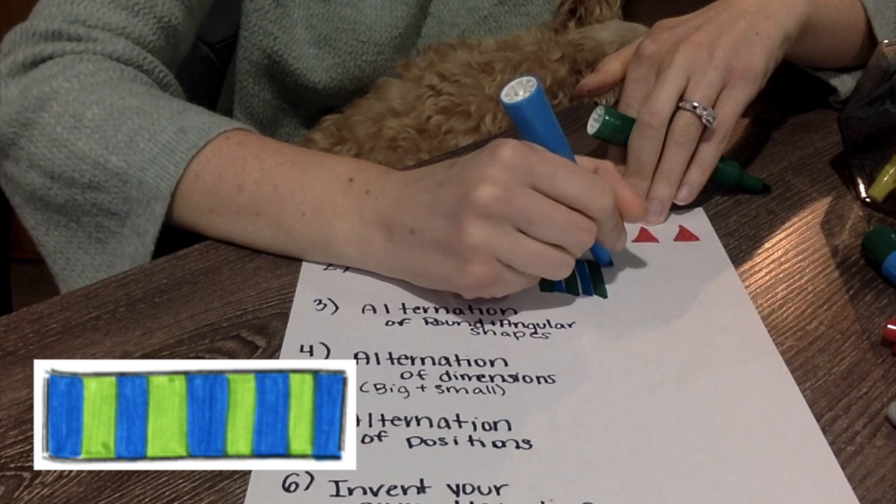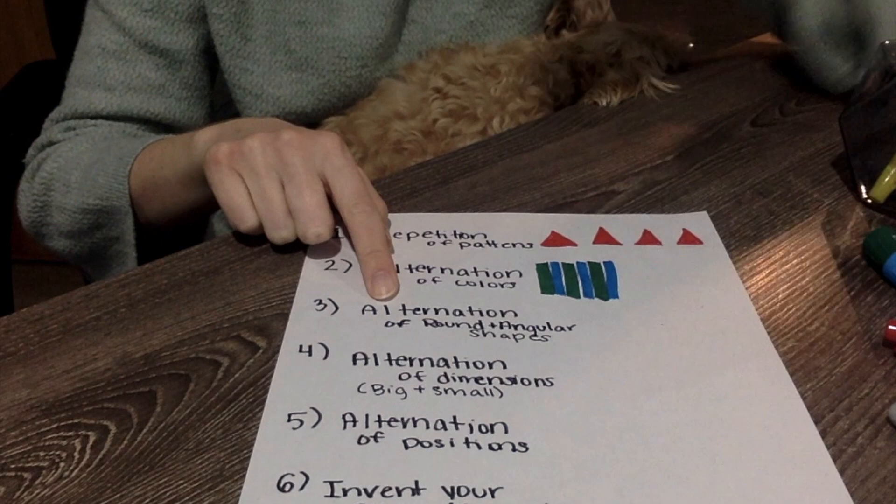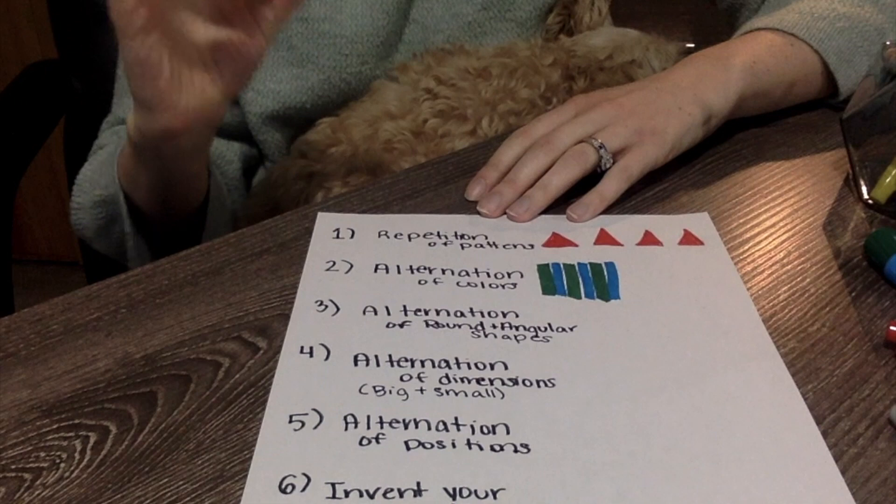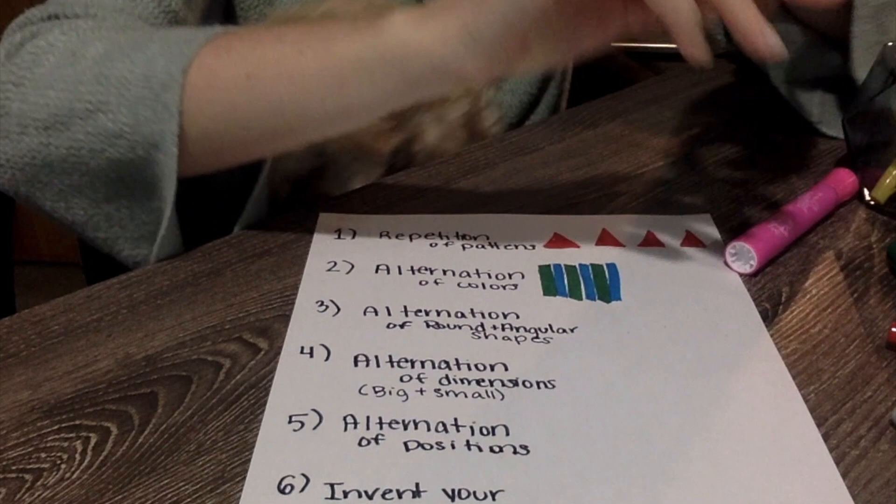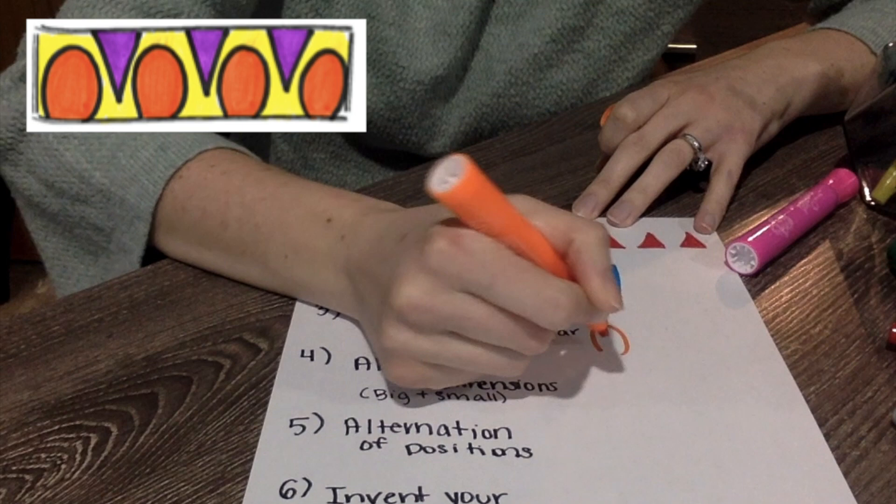Now this one says alternation of rounded and angular shapes, so rounded would be a circle and then angular would be anything that has a point. So what I am going to do is I am going to make some curved like oval shapes at the bottom here.